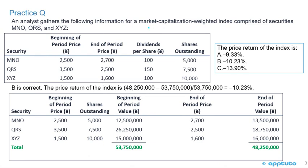With these questions, you have to read them very carefully to identify the weighting method and what they're asking you to calculate — whether it's the price return or total return. This question says market capitalization weighted index. Since they're asking for the price return, we know we don't need the dividends per share.